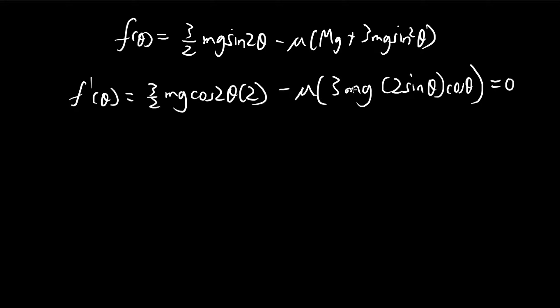So that's equal to zero, so we can take away some of the useless constants. So you see this 2, this cancels out. So we have 3 cosine 2 theta minus 6 sine theta cosine theta mu.